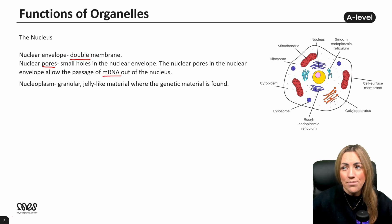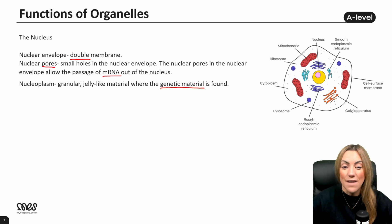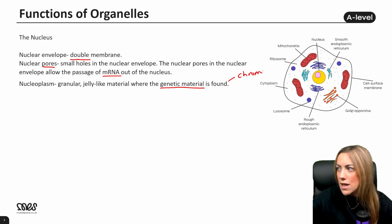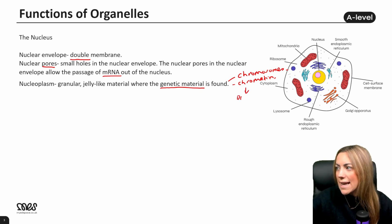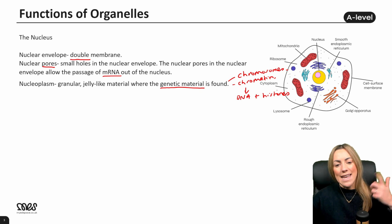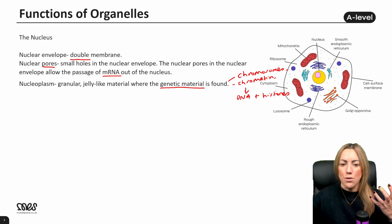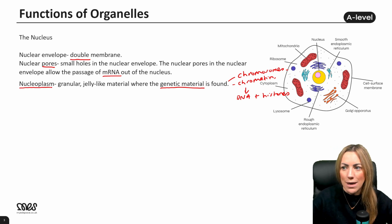The nucleoplasm is a granular, jelly-like material. This is where the genetic material is found — this is where we find the chromosomes, which are made of chromatin. Chromatin is DNA and histones. The chromatin is DNA that wraps itself around the histone proteins to form the linear chromosomes, which are in the nucleoplasm.